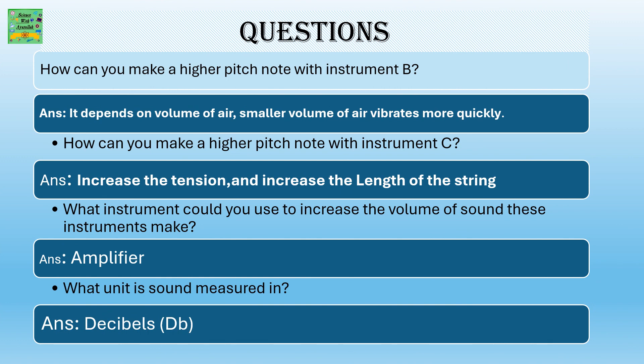How can you make a higher pitch note with instrument B? The answer is it depends on the volume of air. A smaller volume of air vibrates more quickly, so a higher pitch note is easier to make.